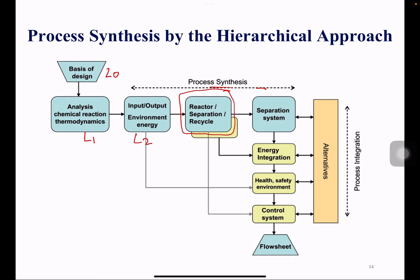Level Two is your input-output analysis. Here you also do studies on environment and energy — you identify the output streams, harmful gas streams, or waste liquid coming out of your process to assess environmental impact. You also determine your energy requirements in the process. At this level you perform the overall mass and energy balance, and you also need to perform an economic potential analysis.